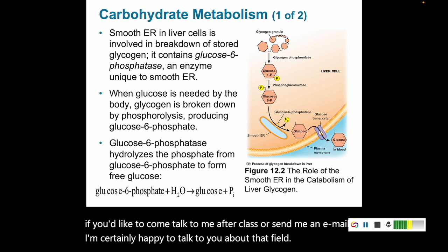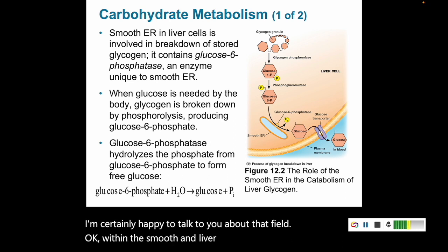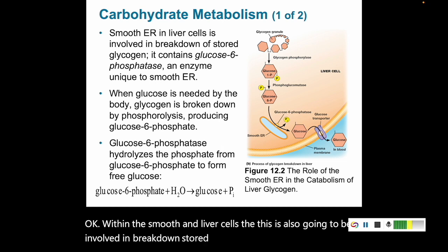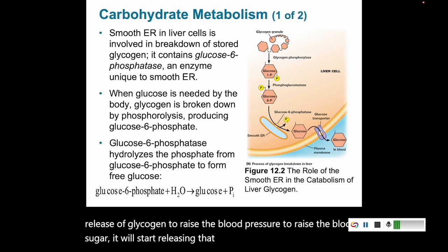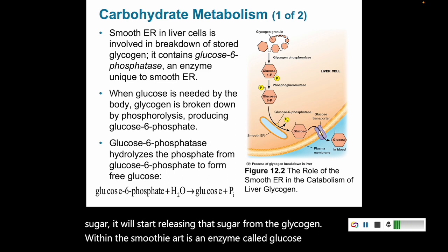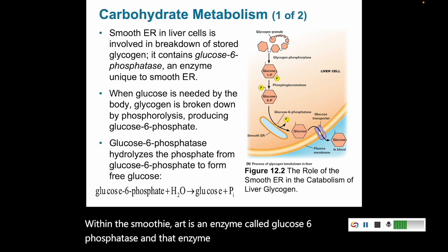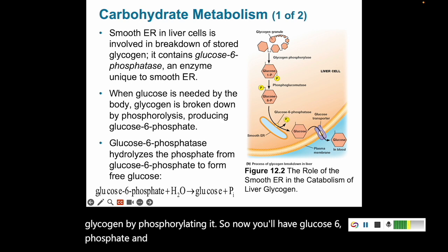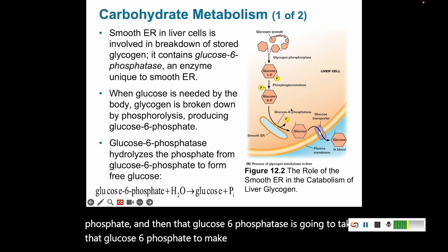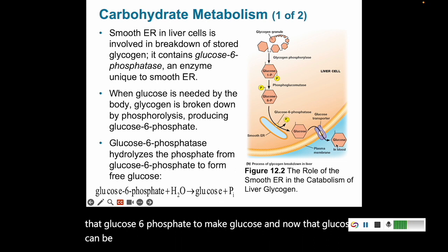Within the smooth ER of liver cells, it is also involved in breaking down stored glycogen. When the cell needs to raise blood sugar, it will start releasing sugar from the glycogen. Within the smooth ER there is an enzyme called glucose-6-phosphatase, which helps break down the glycogen by phosphorylating it to form glucose-6-phosphate, and then converts that into glucose, which can be released into the blood to raise blood sugar levels.